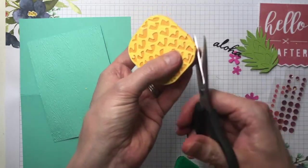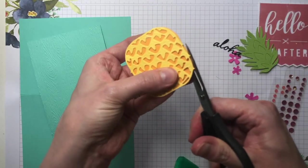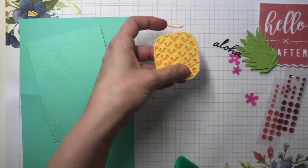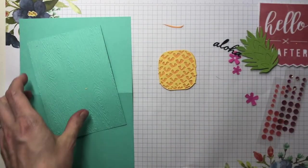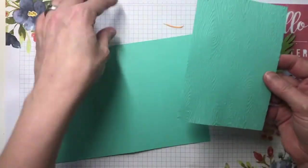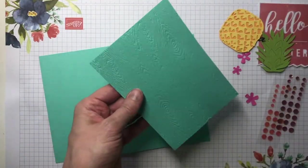I might just carefully trim away just some of that excess. That's that, and the panel on the front can be glued down.